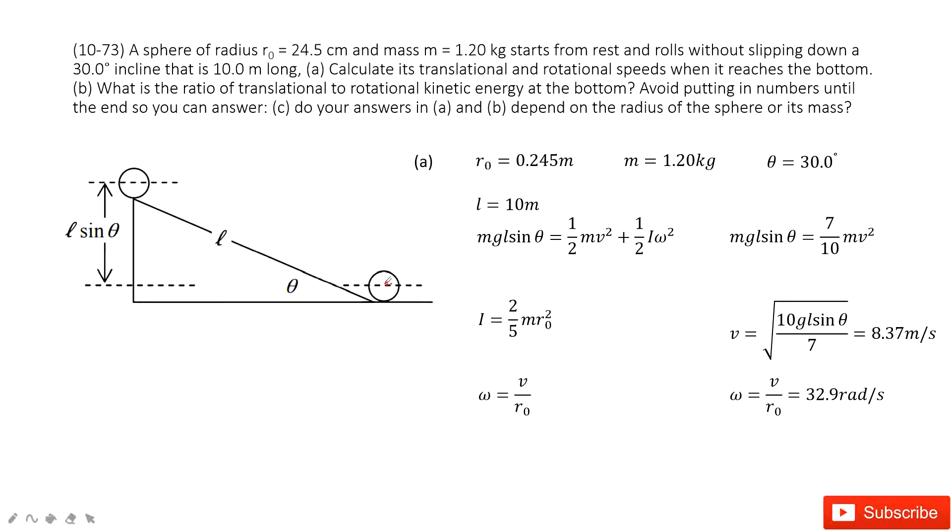What quantities are given? The radius of the sphere, the mass of the object, the angle theta for the triangle, and the length of the distance.